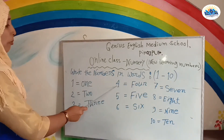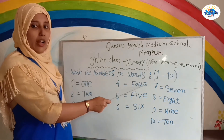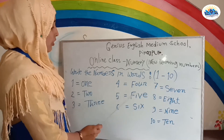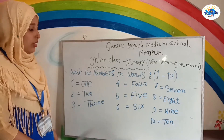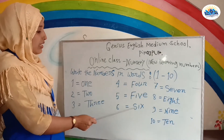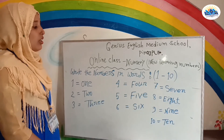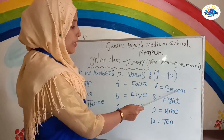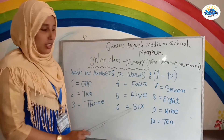Okay, children. Number four: A-F-O-U-R. Four. Number five: A-F-I-B-E. Five. Number six: A-S-I-S. Six. Number seven: S-E-B-E-N. Seven.